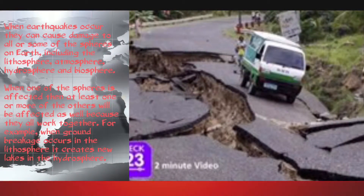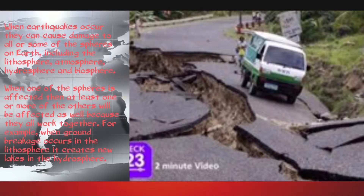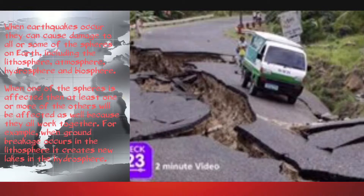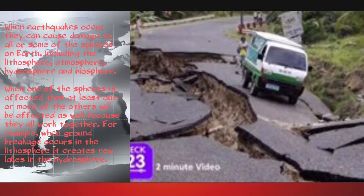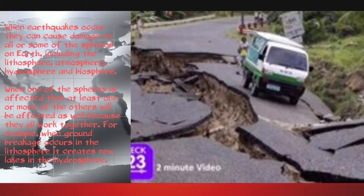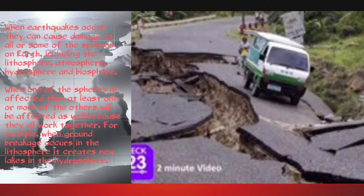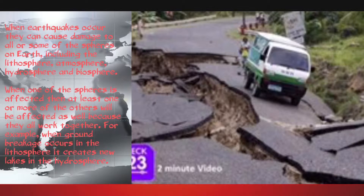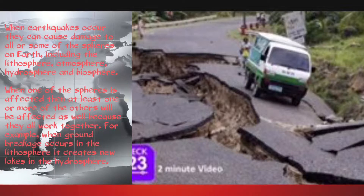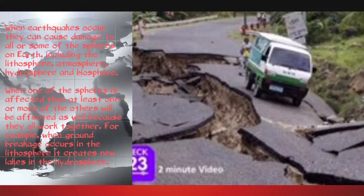When earthquakes occur, they can cause damage to all or some of the spheres on Earth, including the lithosphere, atmosphere, hydrosphere and biosphere. In this part, we will only talk about the impacts of earthquakes on the lithosphere, hydrosphere and biosphere. When one of the spheres is affected, then at least one or more of the others will be affected as well, as they all work together.